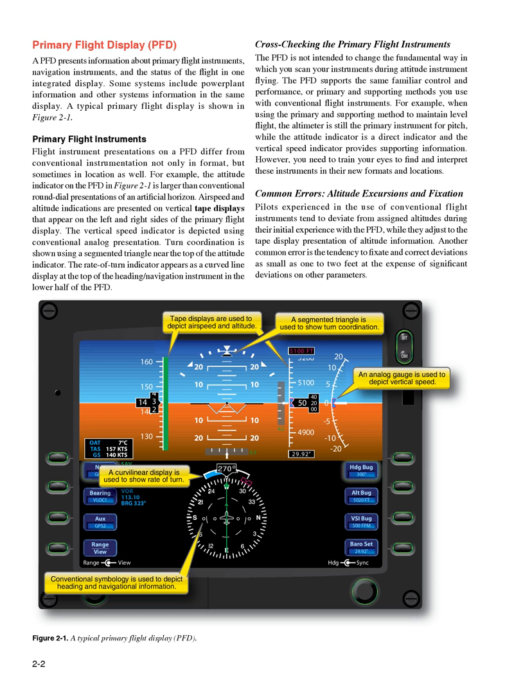The vertical speed indicator is depicted using a conventional analog presentation. Turn coordination is shown using a segmented triangle near the top of the attitude indicator. The rate of turn indicator appears as a curved line display at the top of the heading and navigation instrument in the lower half of the PFD.